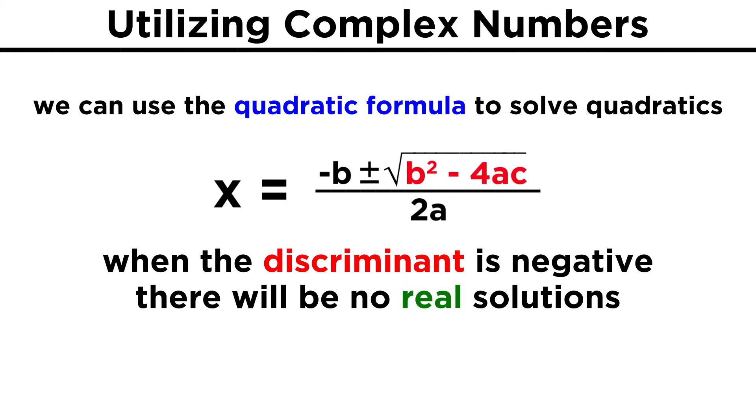We can get imaginary roots if we express them in terms of i. For quadratics with no real solutions, there will be two solutions in the form of complex numbers, and they will specifically be complex conjugates.